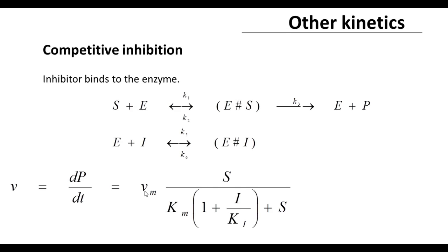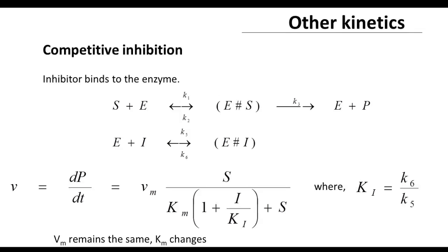Vm remains intact. The Ki here is K6 (the reverse reaction rate constant) divided by K5 (the forward reaction rate constant). As mentioned, Vm remains the same and Km changes. So if we plot the Lineweaver-Burk plot, we will get appropriate values as the slope and as the intercept. I will let you figure that out — let us assign a problem so that you can work it out.